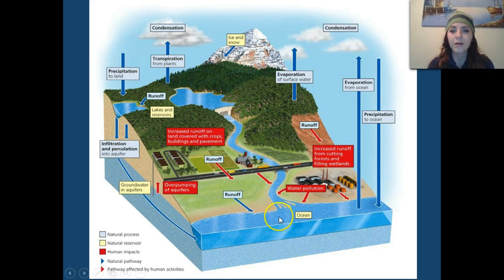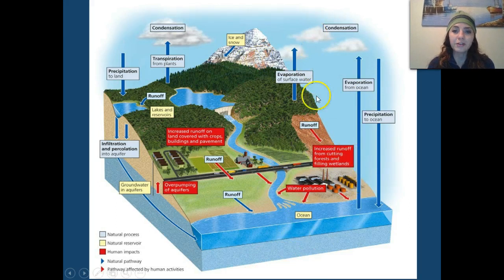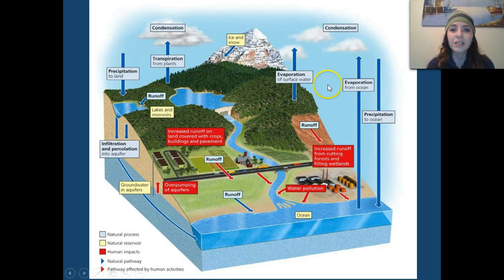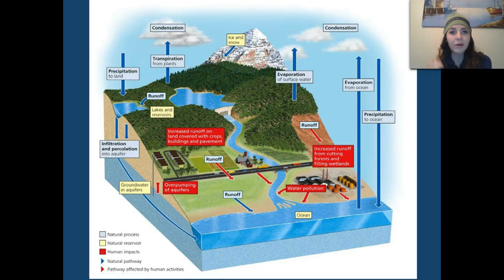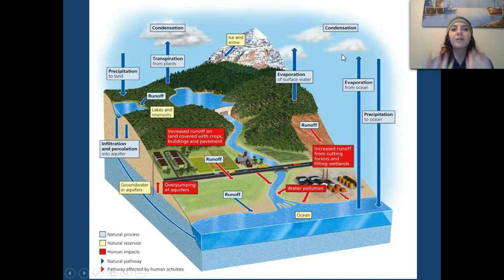We have runoff into the water, and then we have evaporation, which can occur on land as well as the ocean. Evaporation releases water vapor into the atmosphere. We also have transpiration from plants — their stomata open and release water vapor up into the atmosphere. Eventually all of this condenses and we have precipitation coming down once again.